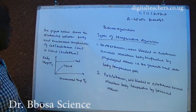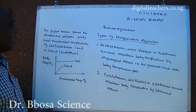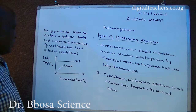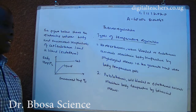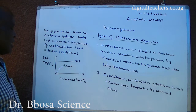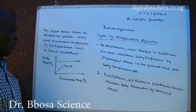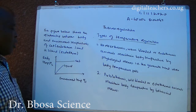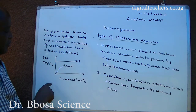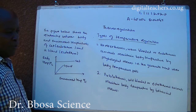The figure below shows the relationship between body and environmental temperatures of a cat (endotherm) and a lizard (ectotherm). From the graph, endotherms such as cat, man, and rat maintain constant body temperature irrespective of environmental temperature, while ectotherms such as lizard, frog, and fish have body temperature varying with environmental temperature.